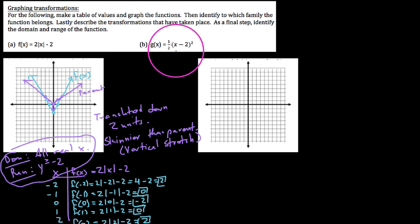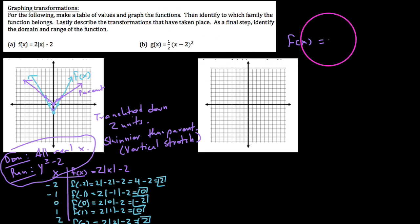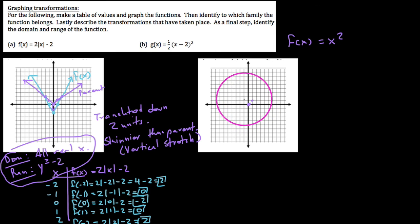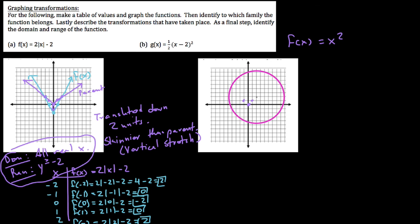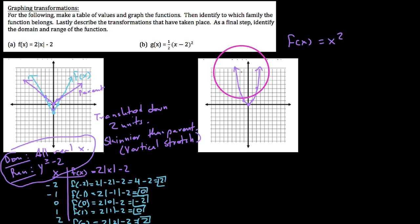As an additional exercise, go ahead and graph this last function and compare it to its parent function, which is f of x equals x squared — our parabola. It started at the origin, went through one-one, negative one-one, two-four, and negative two-four. Describe the transformation that you see, as well as the domain and range.